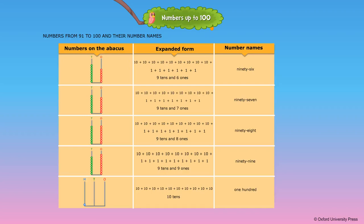Whenever we get 10 beads in the tens place of an abacus, we have to add 1 bead to the hundreds place and remove the 10 beads from the tens place. Now we have 100. 10 tens is equal to 100. 100 is a 3-digit number.